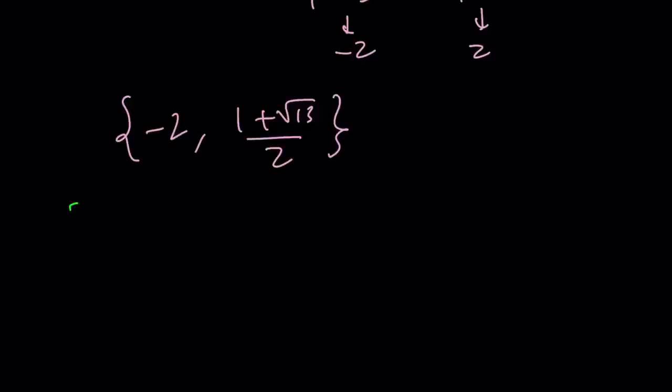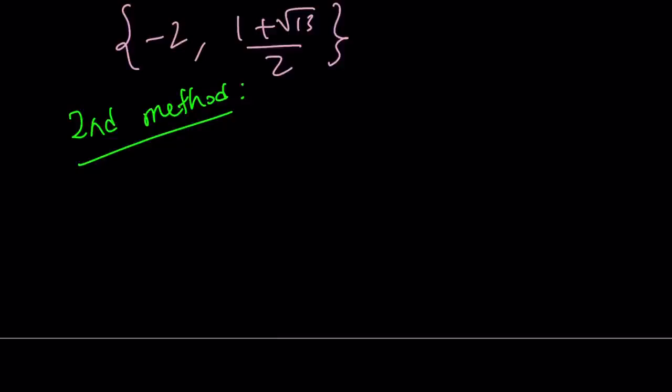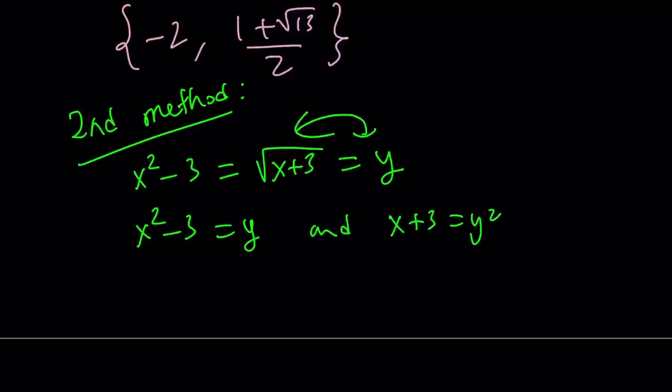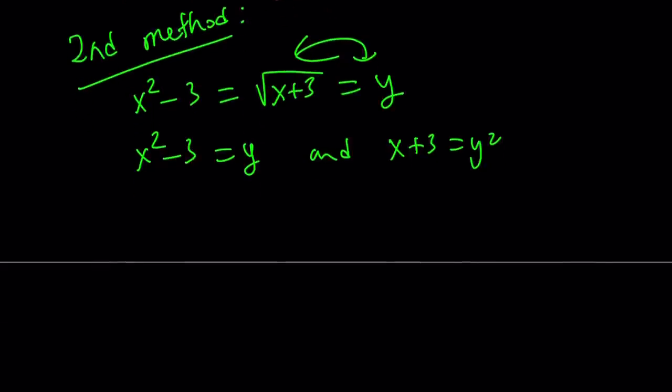All right, let's go ahead and talk about the second method. And the second method is obviously nicer because the first one is not that nice and kind of painful and so on and so forth. So this is our original problem. I'm going to set both of these equal to y and hopefully you know why. From here, I get two things. x squared minus 3 equals y and x plus 3 equals y squared. Of course, I'm squaring both sides here. But that's kind of interesting. I can do the following.